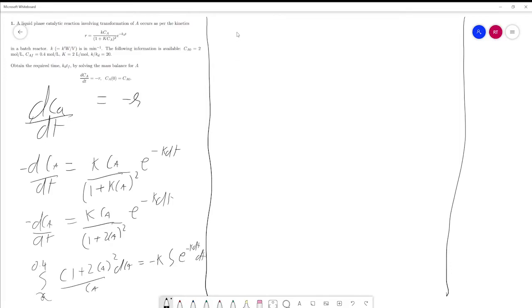Now you just have to expand this one. You can see 1 plus Ca squared plus the combination of 0.4 equals minus K times 2 dT.